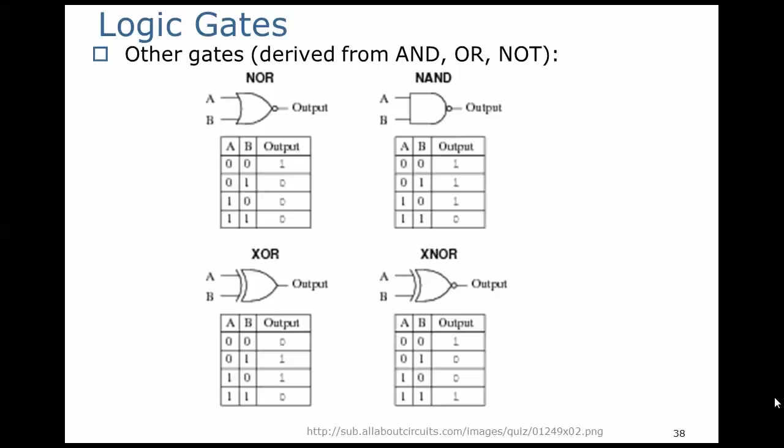A regular OR gate would have a true output when both A and B were true. Here, the output's low.